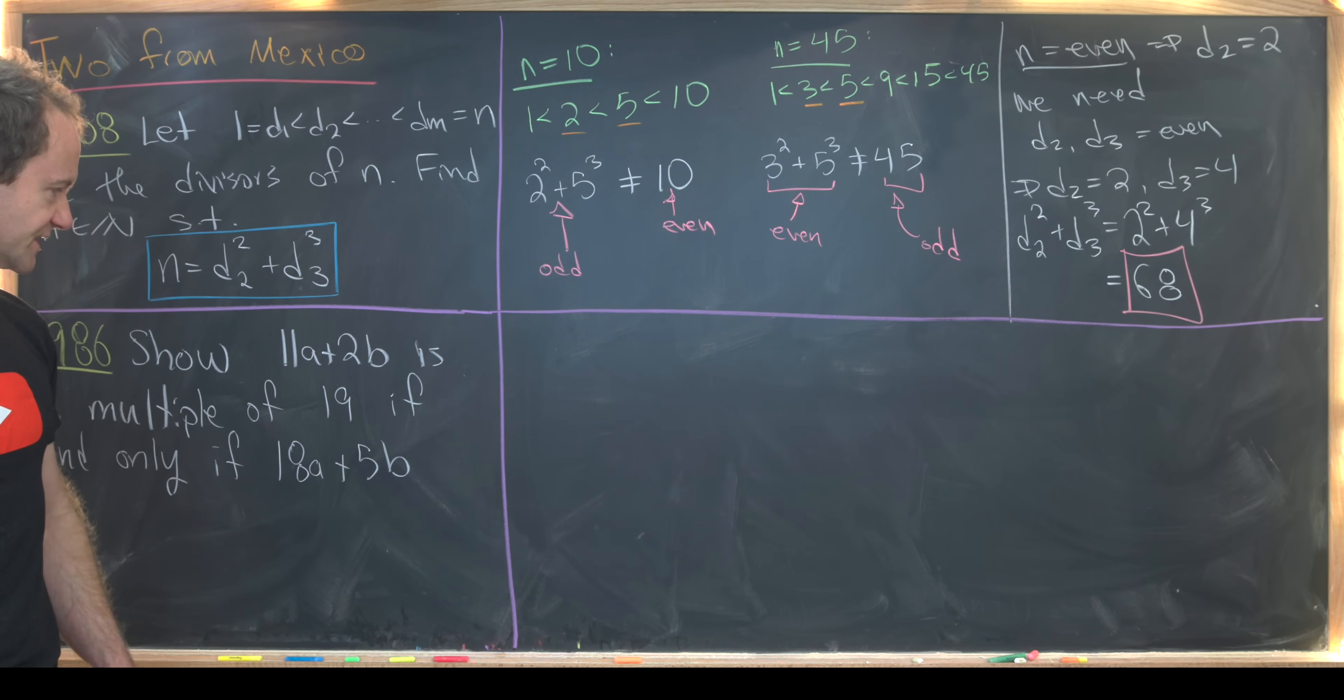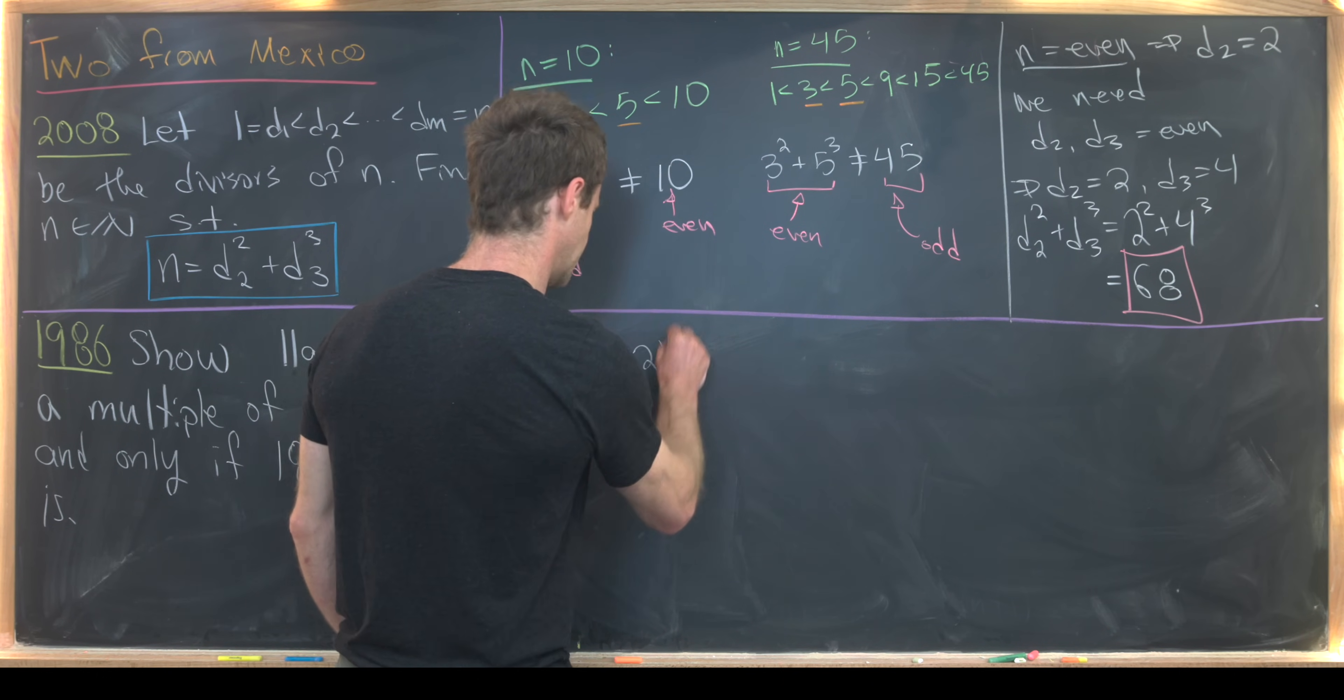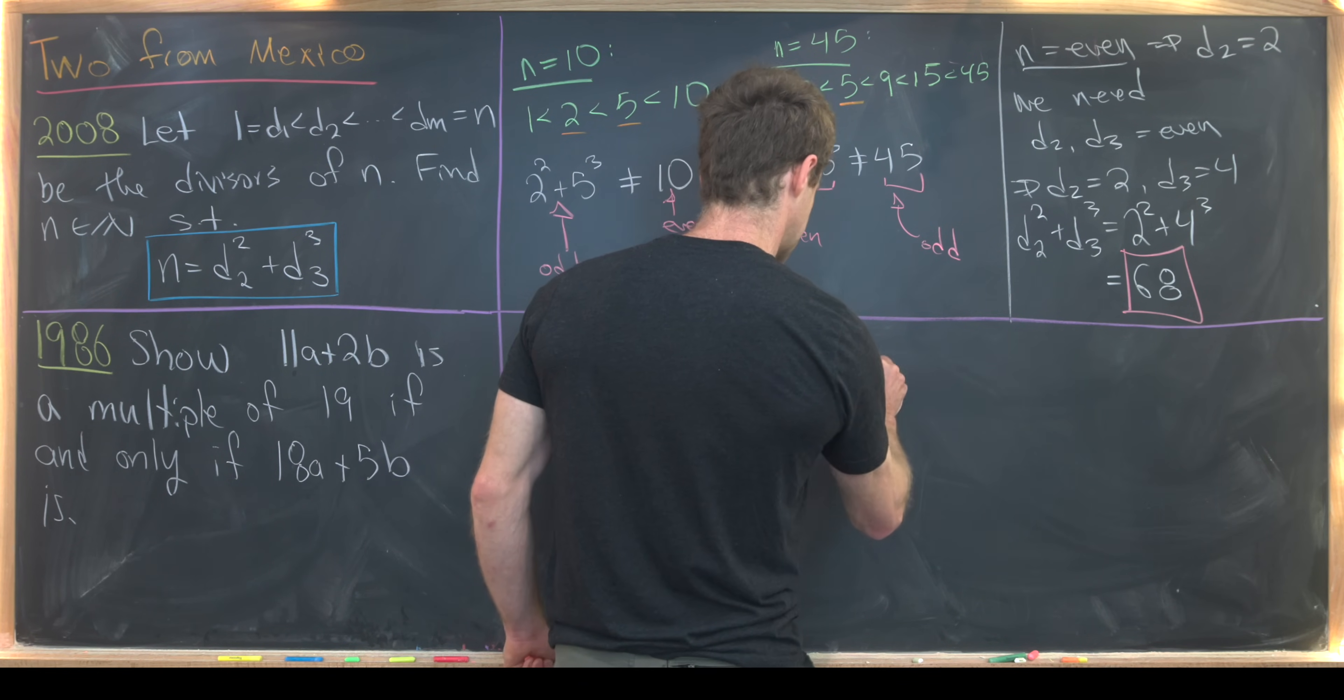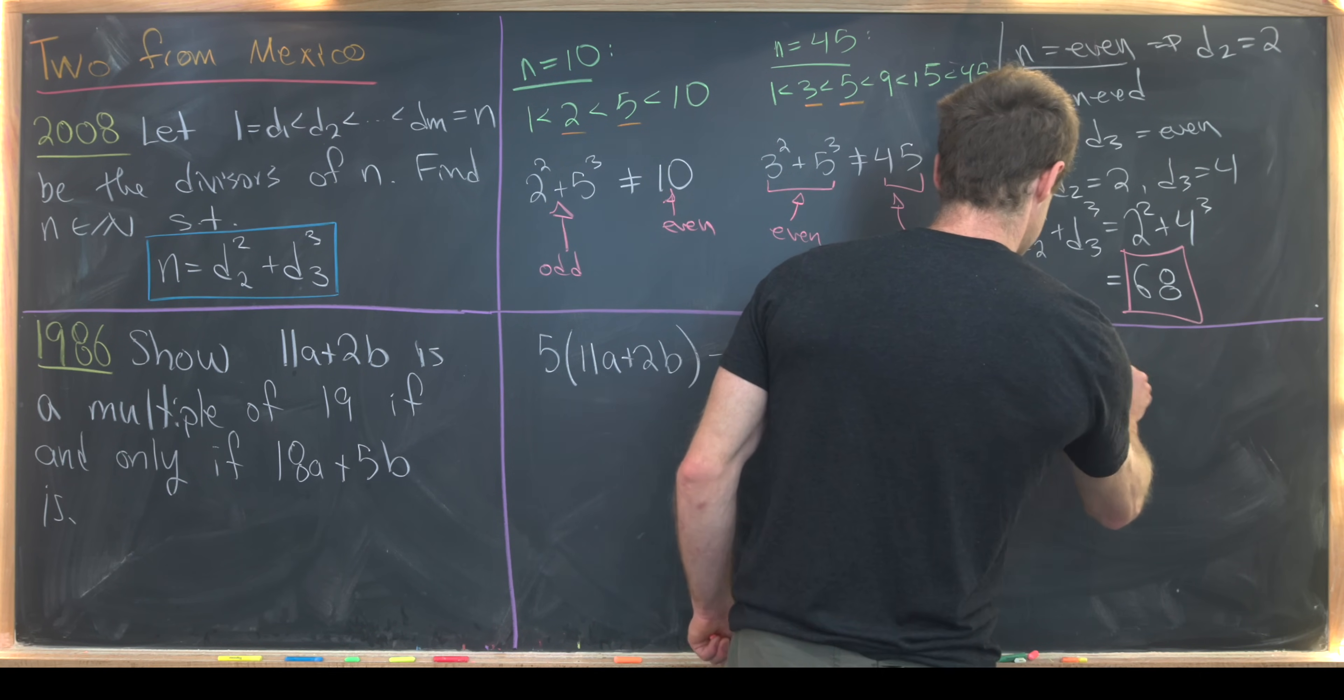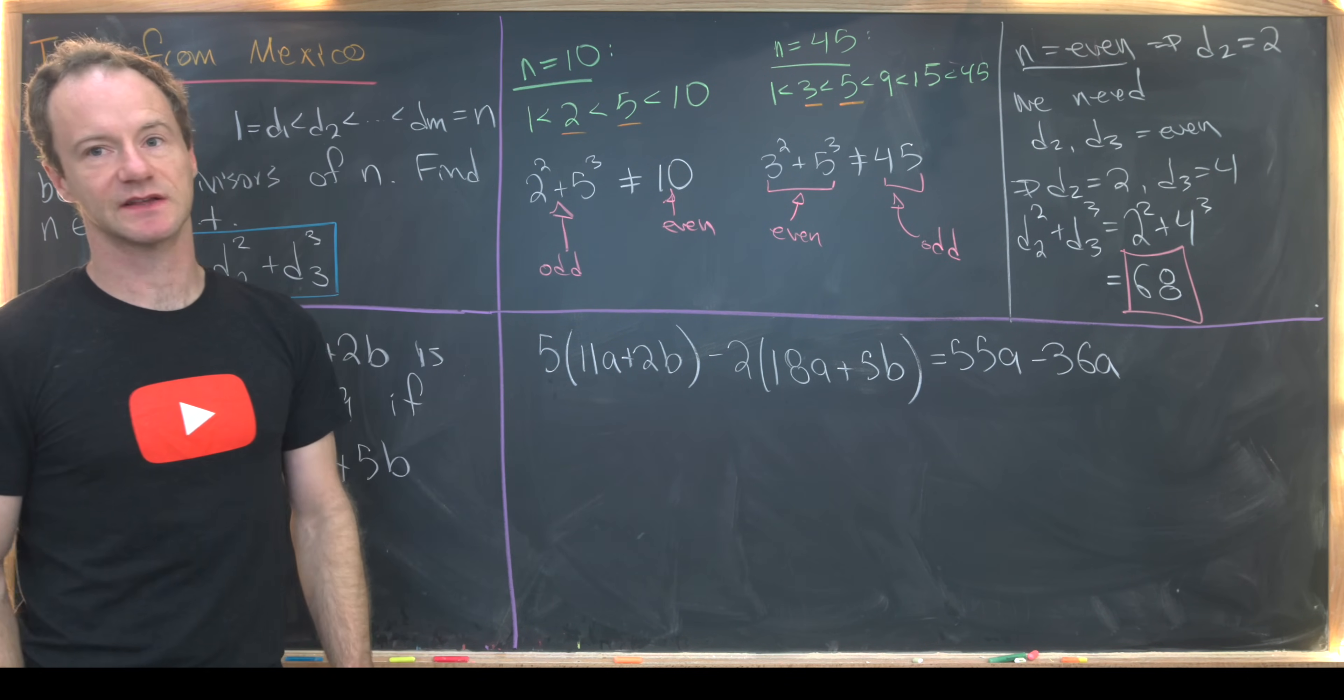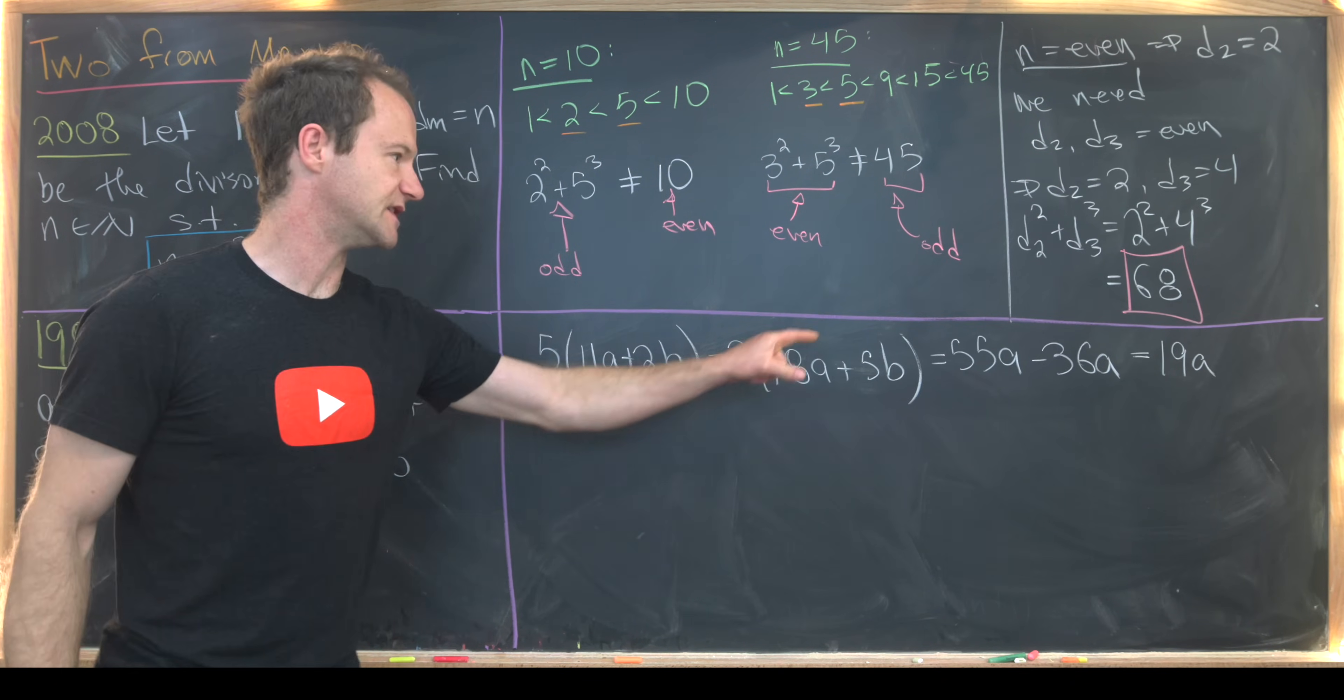And there are two strategies here. We could try to eliminate the B variable or eliminate the A variable. Since the B variable is connected to two smaller numbers, I'll eliminate that. So let's maybe take this guy right here and multiply it by 5. So we have 5 times 11A plus 2B. Then we'll multiply this one by negative 2. Minus 2 times 18A plus 5B. So let's see what we get out of that. We'll have 55A minus 36A from this term and this term. And then we'll have 10B minus 10B, so that cancels. But what's 55 minus 36? It is 19. So we have this combination of these two is equal to 19A.